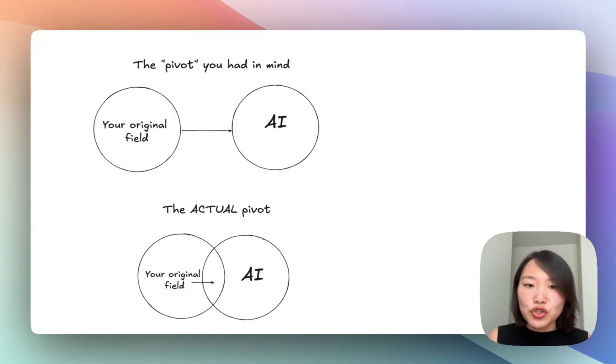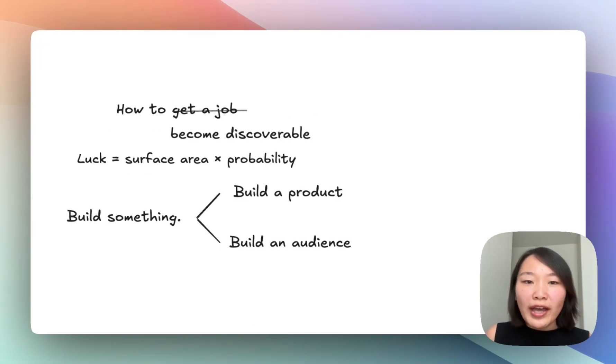So how do you actually land a job in AI? I prefer to reframe this question into how to get discovered, because I don't believe the traditional job-seeking methods are relevant anymore. You shouldn't be sending your resumes into hundreds of job postings and hoping someone picks it up. Most likely they'll just pass on it because on the surface you don't have any AI-related experience. Instead, you should spend your time working on becoming discoverable.